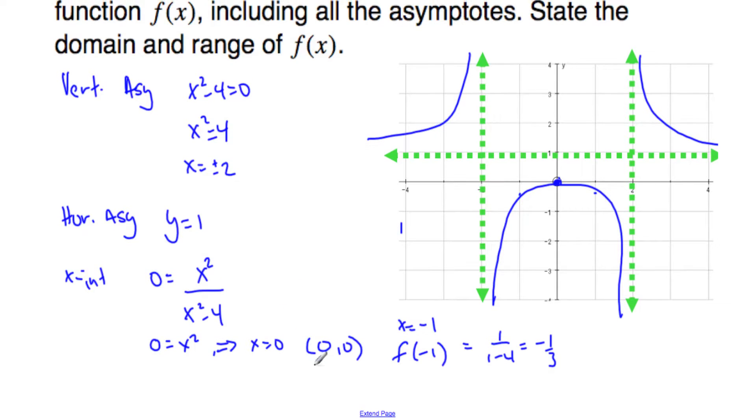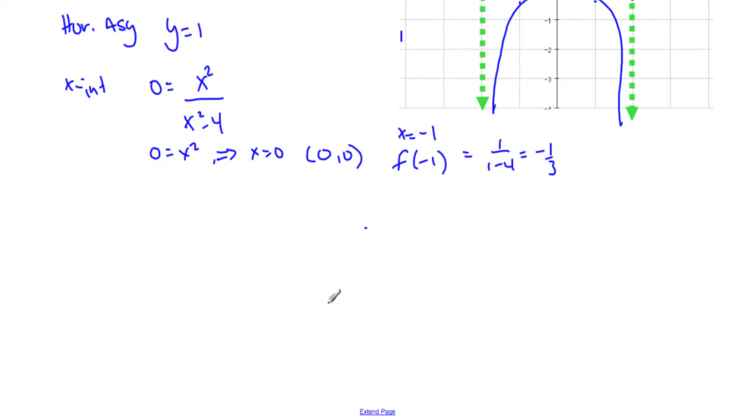To wrap up the question, it says state the domain and the range. Well, the domain I know is x belongs to the set of real numbers, such that x cannot be plus or minus 2. These are the asymptotes, it can't be those.